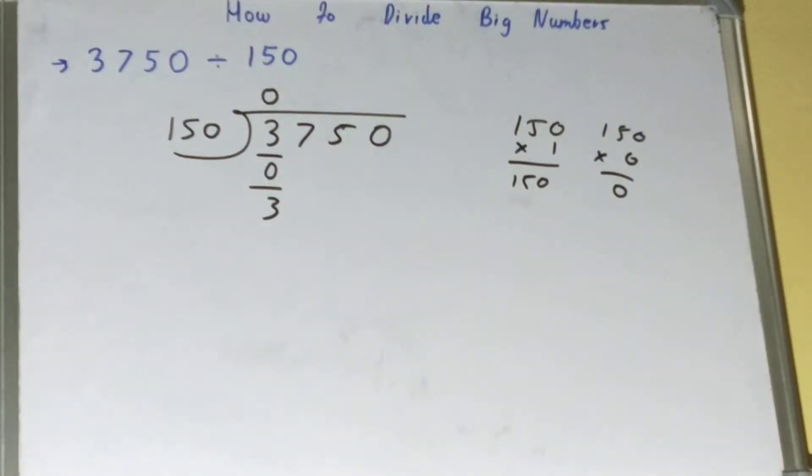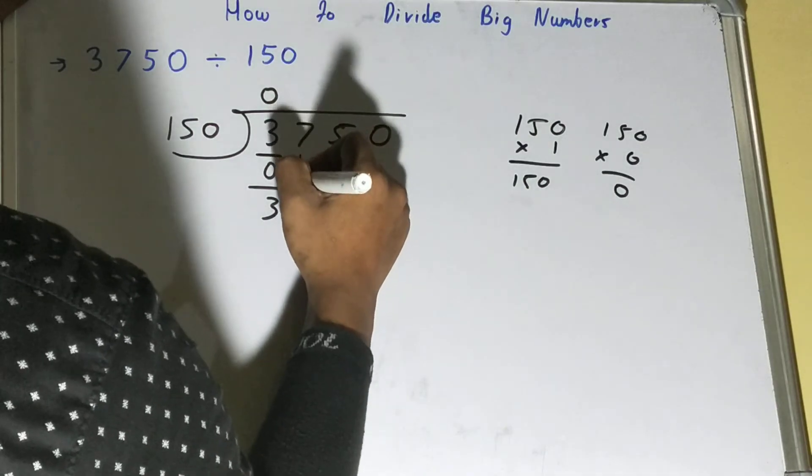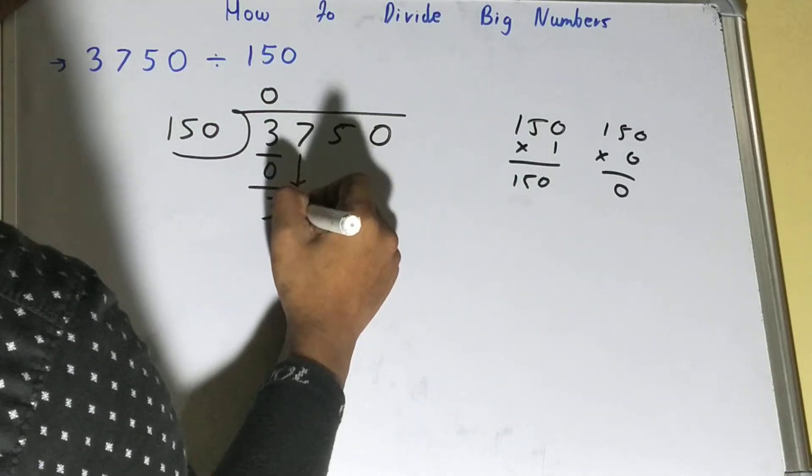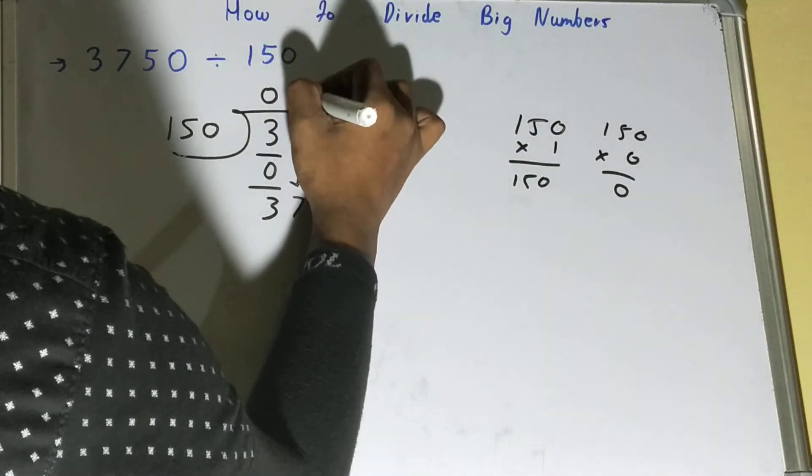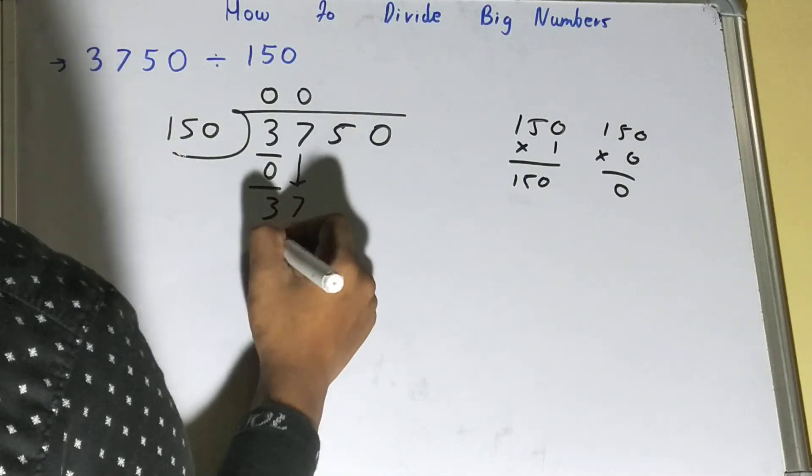Now the next digit will come, that is 7. 37 is again less than 150, so again you need to multiply it by 0. You'll have 0 and you will be left with 37.